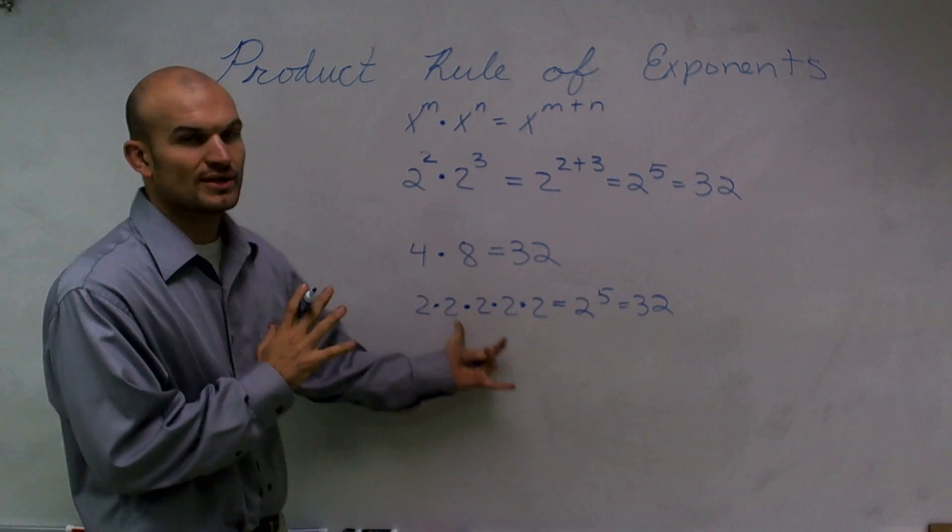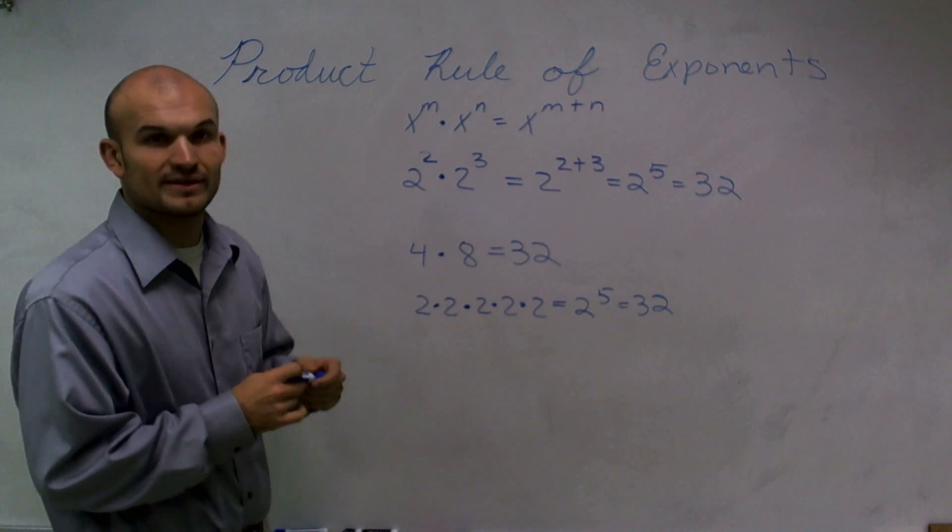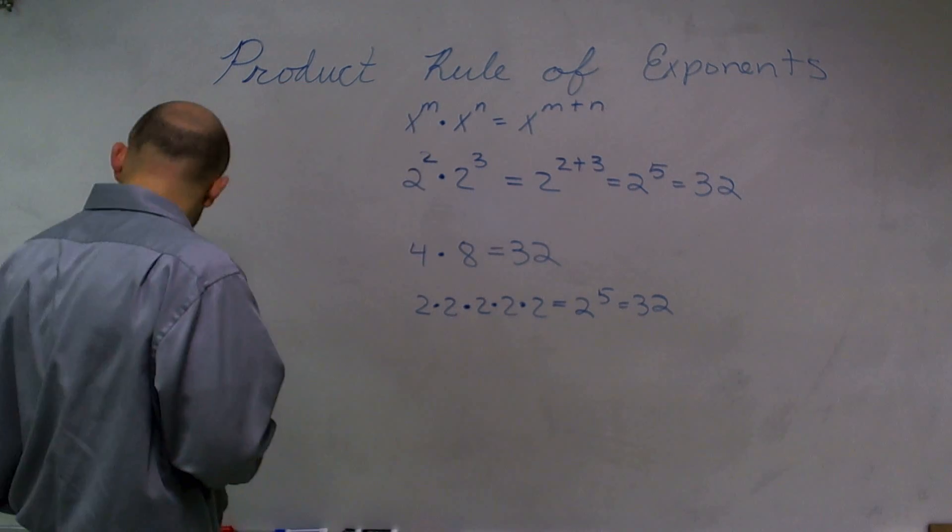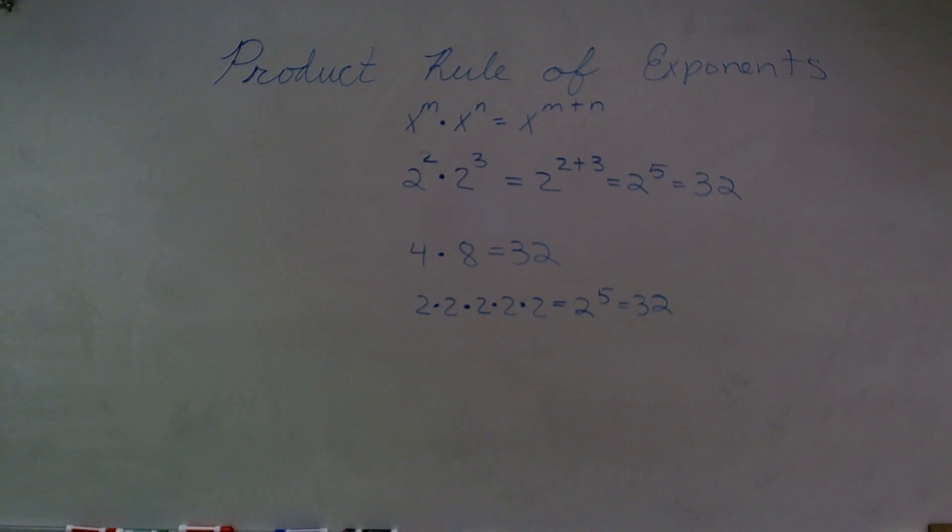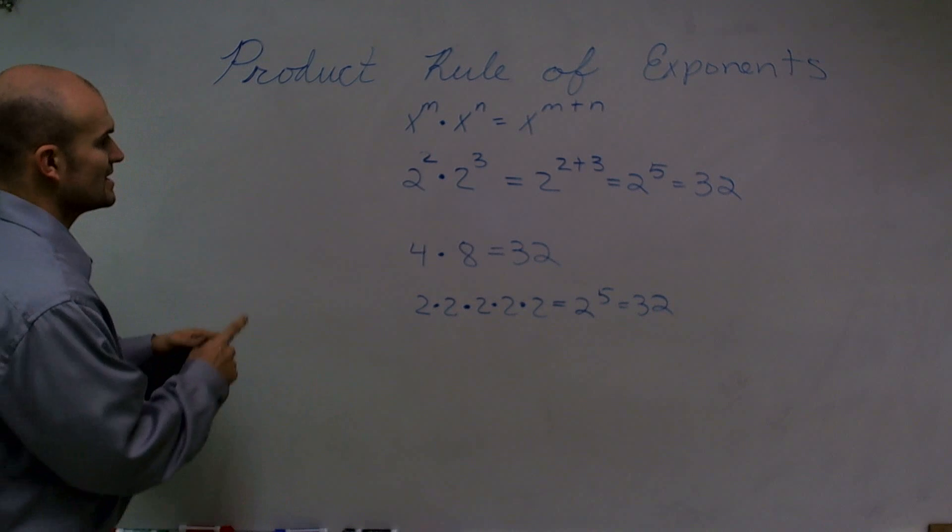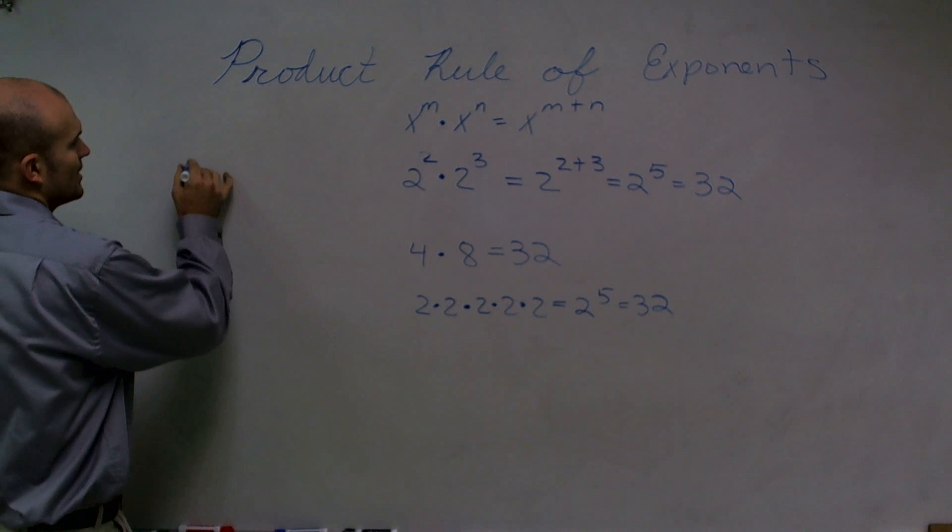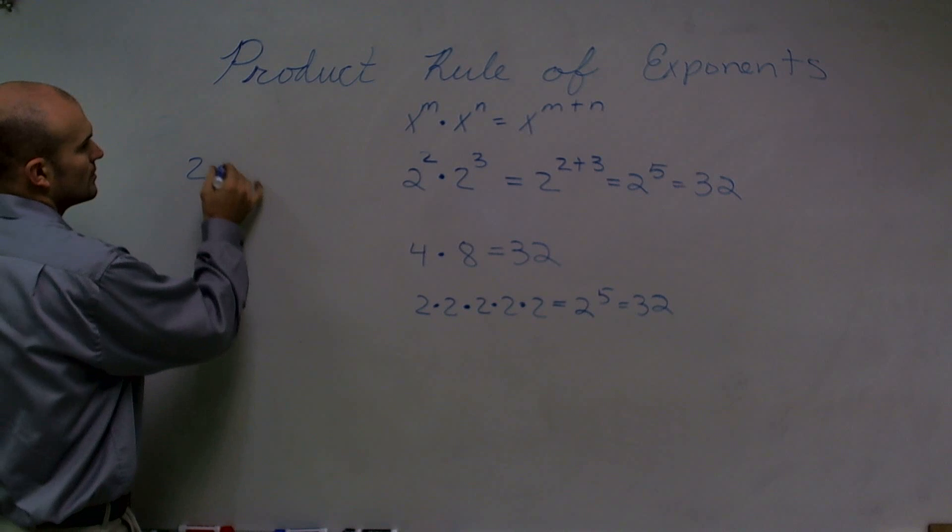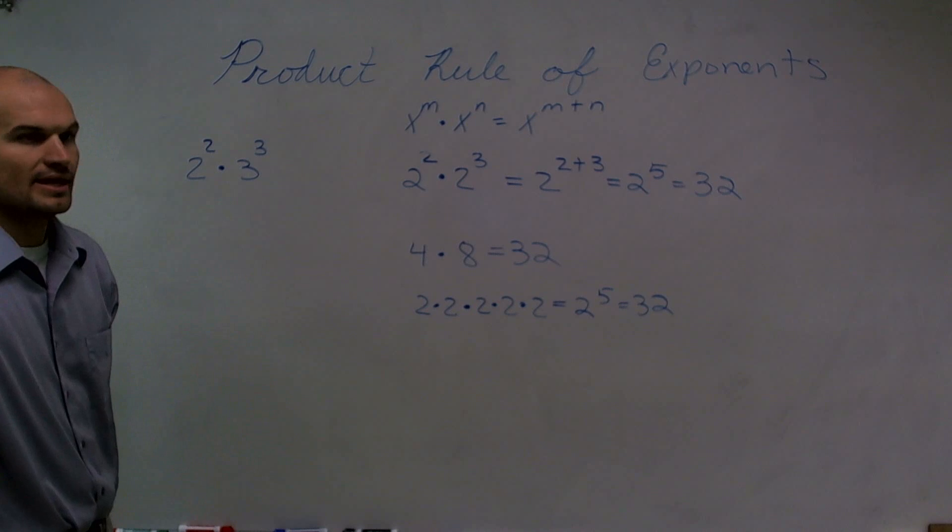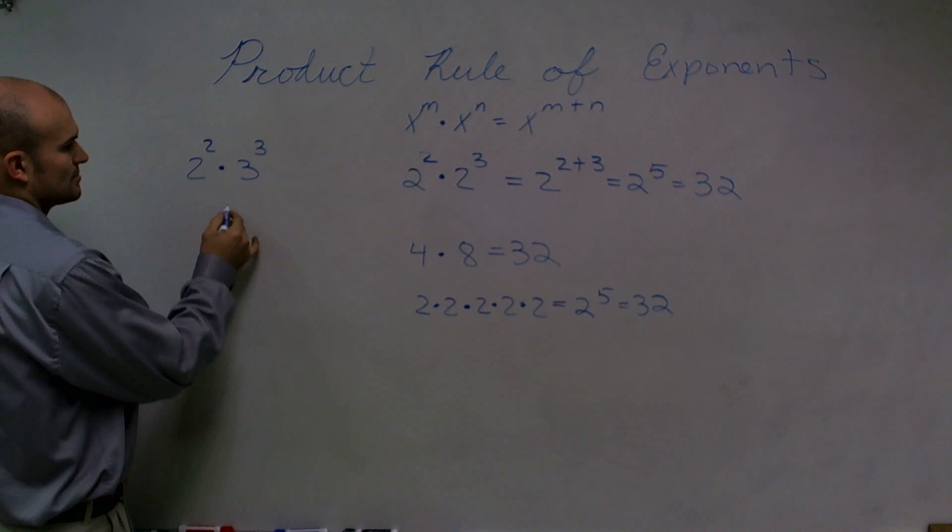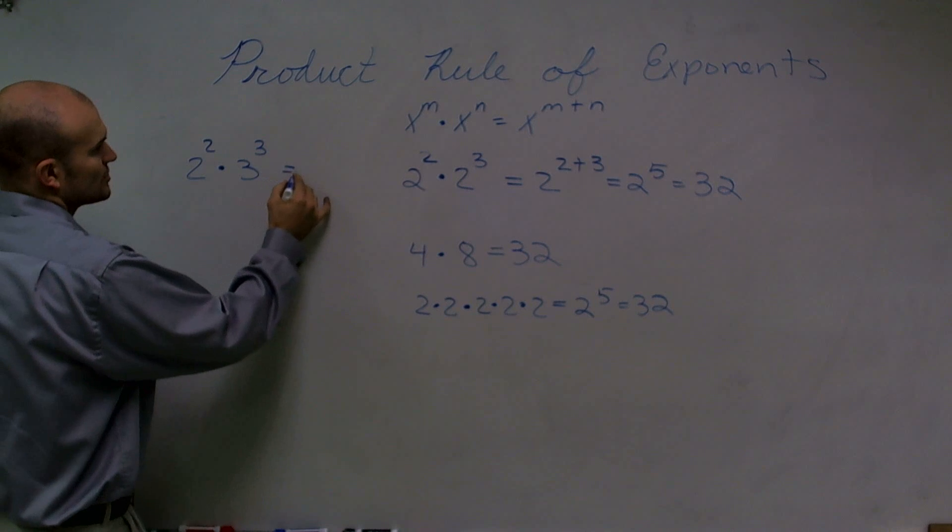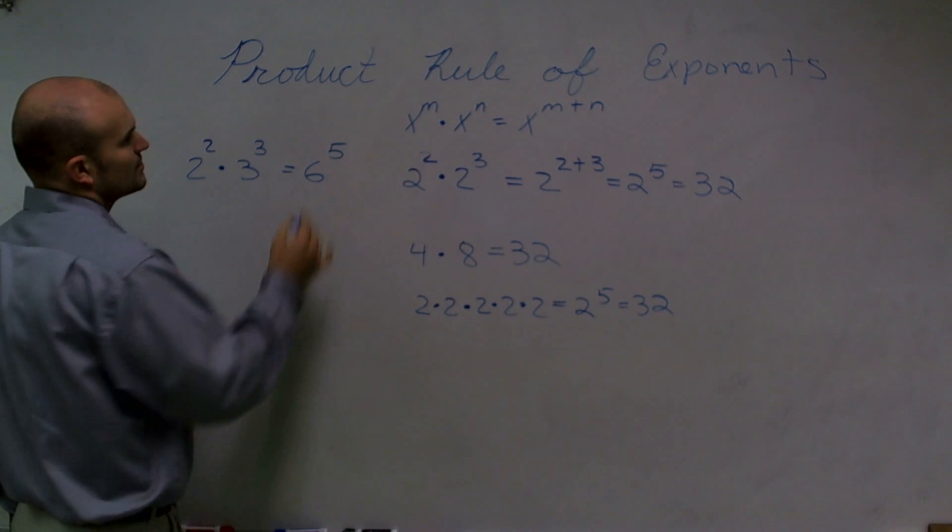Now, let's look at a couple of misconceptions before I even get started with the other things. A lot of students want to go and take a look at this and say, oh, well, what about if x and y are not the same? So let's say 2 squared times, let's do 3 cubed. And they say, you know, it can work the same. And it equals, I don't know, they want to multiply these numbers and say that's equal to 6 to the fifth.